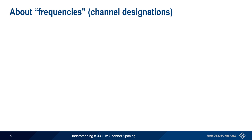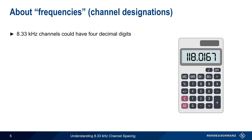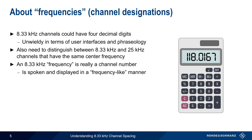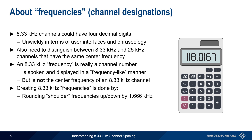One issue with using an 8.33 kHz width is that these channels could have four digits or more following the decimal point, which is somewhat unwieldy in terms of user interfaces and phraseology. Another, perhaps more serious issue, is the need to distinguish between an 8.33 kHz channel and a 25 kHz channel that share the same center frequency. The solution is that an 8.33 kHz frequency is really more like a channel number or designator — unlike 25 kHz channel frequencies, 8.33 kHz channel frequencies are not the center frequency of the channel. An 8.33 kHz frequency is created either by rounding a shoulder frequency up or down by 1.666 kHz, or by artificially adding 5 kHz to a center frequency.